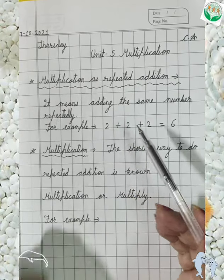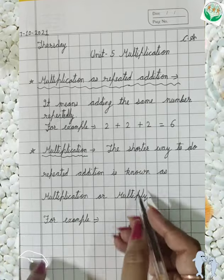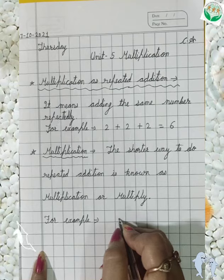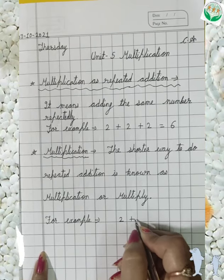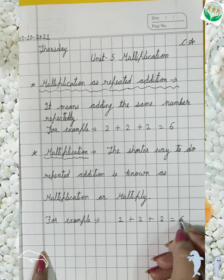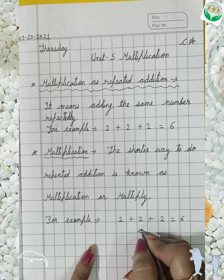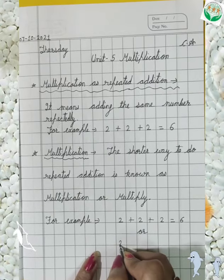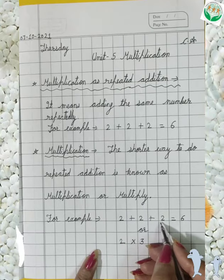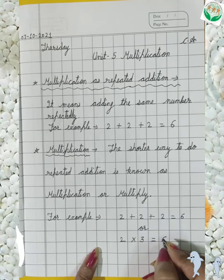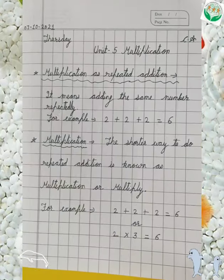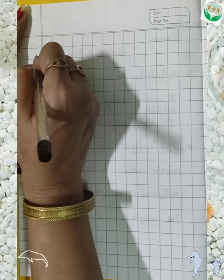When we write it in a shorter way, we multiply it. Like the same example: 2 plus 2 plus 2 is equal to 6, and in the shorter way we write 2 multiply 3, and we get the same answer, 6. This is called Multiply. Now turn to the next page.